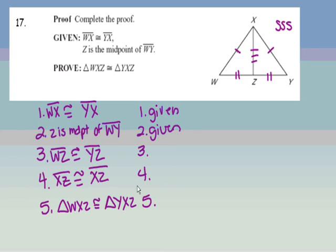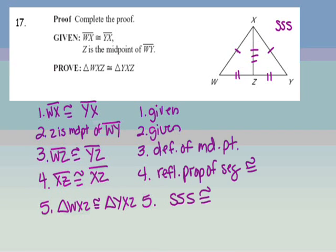If you're still having trouble, here's another hint: copy down the left-hand side of the proof, complete the right-hand side (the reasons), hit pause, and come back once you have answers. This is what you should have gotten for your proof. If you have questions, please be sure to ask in class.